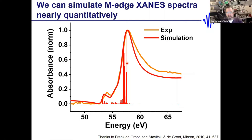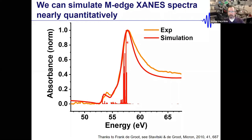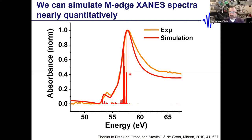We can simulate the spectrum nearly quantitatively using semi-empirical ligand field multiplet theory — a customized version of CTM for XAS. Spin-orbit coupling in the 3p core is less than 1 eV, not enough to split into L₃ and L₂ edges, but it does produce a forest of sticks in simulation. The only inputs are the d-electron count and the ligand field strength 10Dq. We get a very good match to experiment without any adjustments.